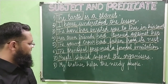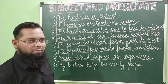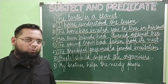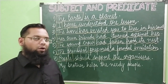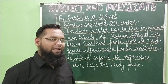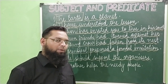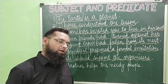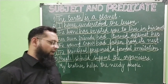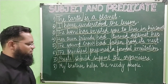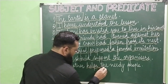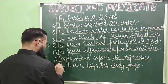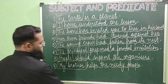The last sentence: 'My brother helps the needy people.' What is the helping verb? There is no helping verb. So the predicate will begin with the verb, which is 'helps.' Therefore, 'helps the needy people' is the predicate, and 'my brother' is the subject.